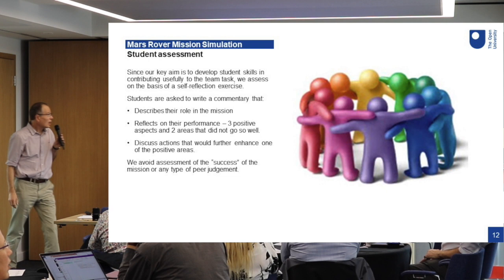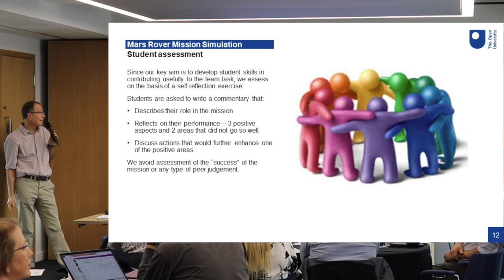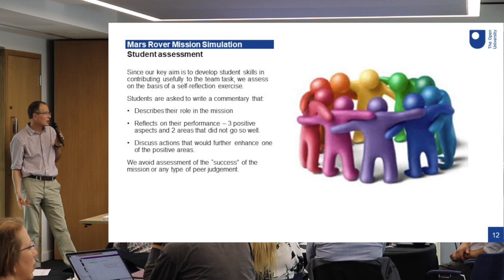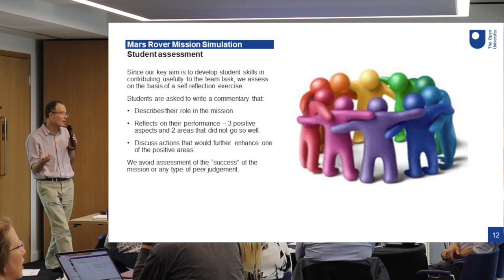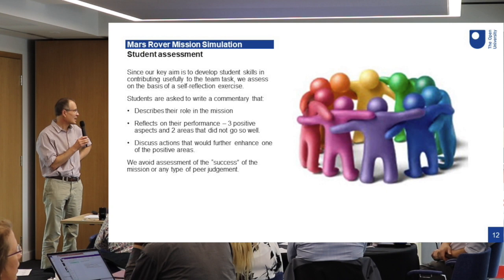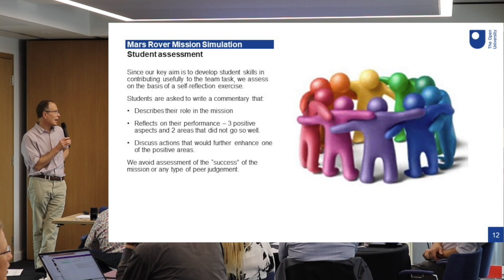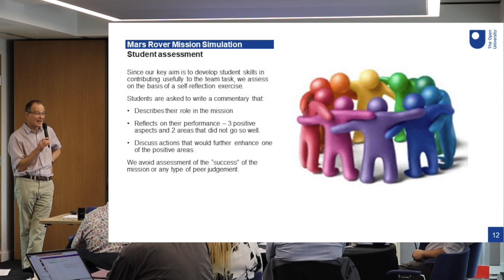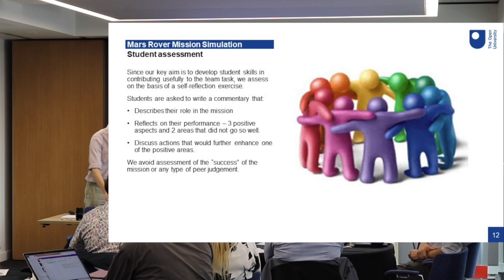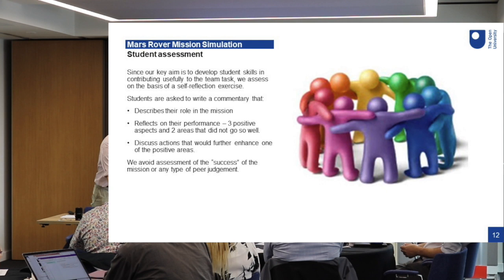We might wonder how we assess a task like this. Since we were really trying to get students to contribute to a team task — communicating complicated information in a time-limited environment with people they've never met — we thought the best thing was to get them to reflect on what they've done. The assessment gets them to describe their role in the mission, reflect on their performance identifying three positive things and two things that didn't go so well, and then discuss one of the things that went well and how it could be made better. We avoid asking about mission success or any kind of peer judgment, because we think that would be toxic in this environment.